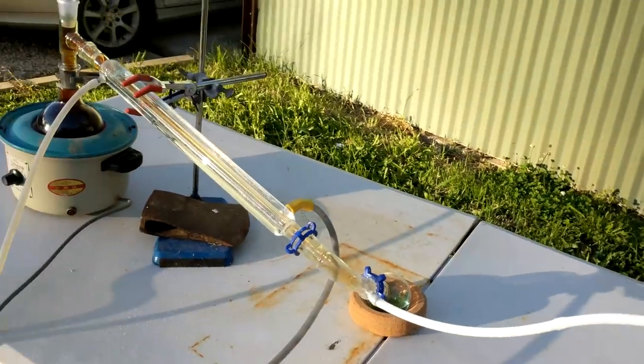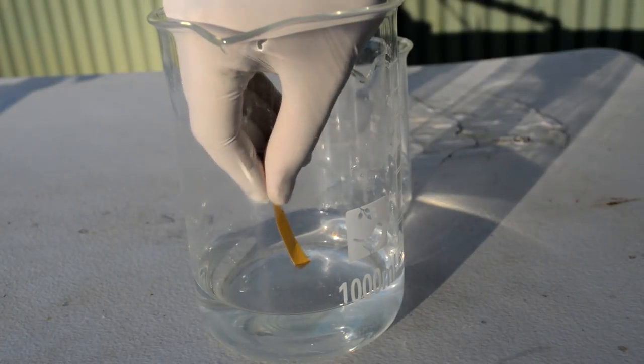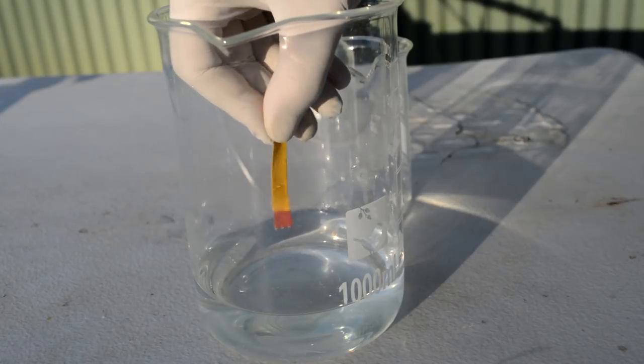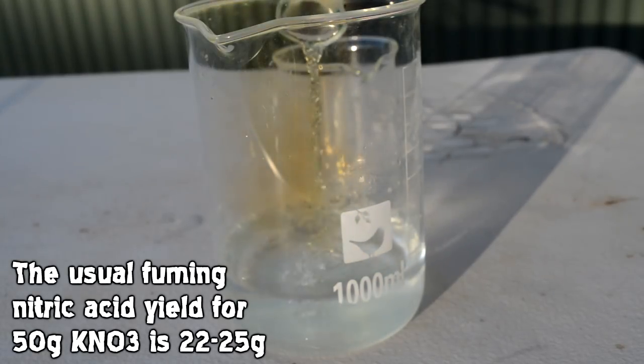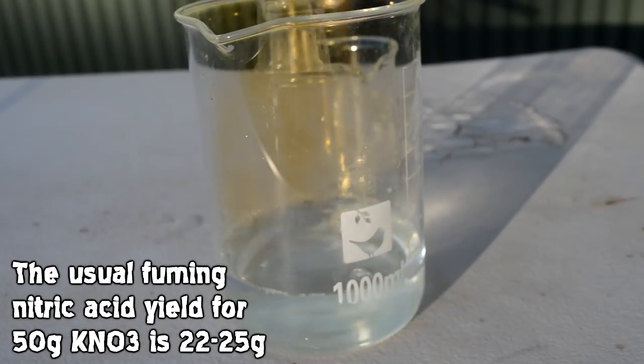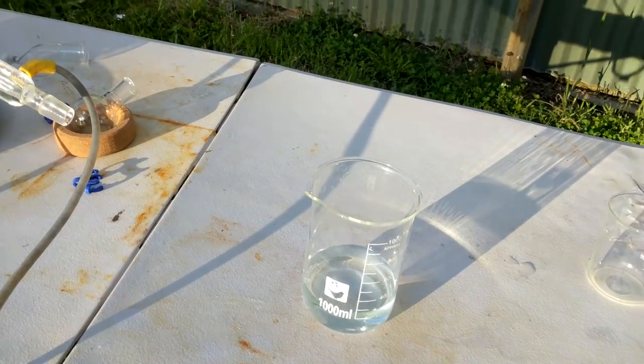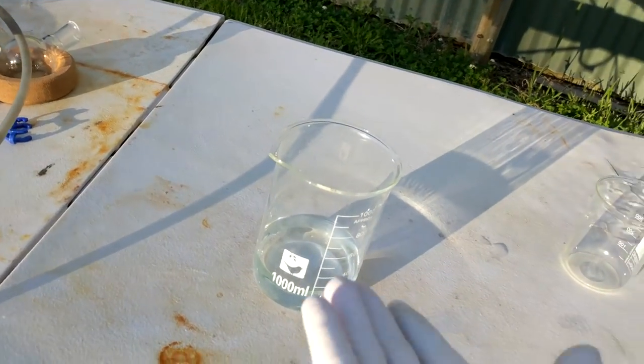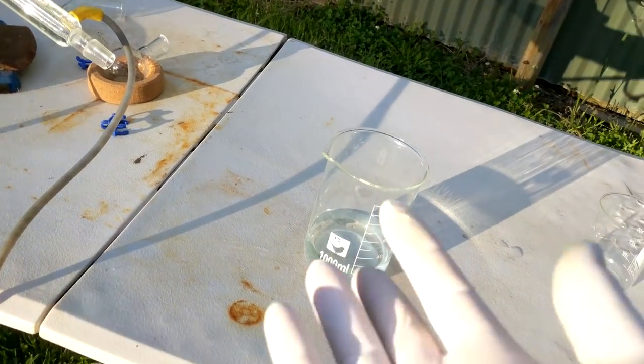So we can test the acidity of this water that the nitrogen dioxide bubbled through. We can see it's definitely very acidic. I think the moral of the story is really sometimes it's good to quit while you're ahead in chemistry, not get too greedy. So I suppose we actually have done what it says in the title. This is nitric acid and we made it without using sulfuric acid. It's just not red fuming nitric acid.